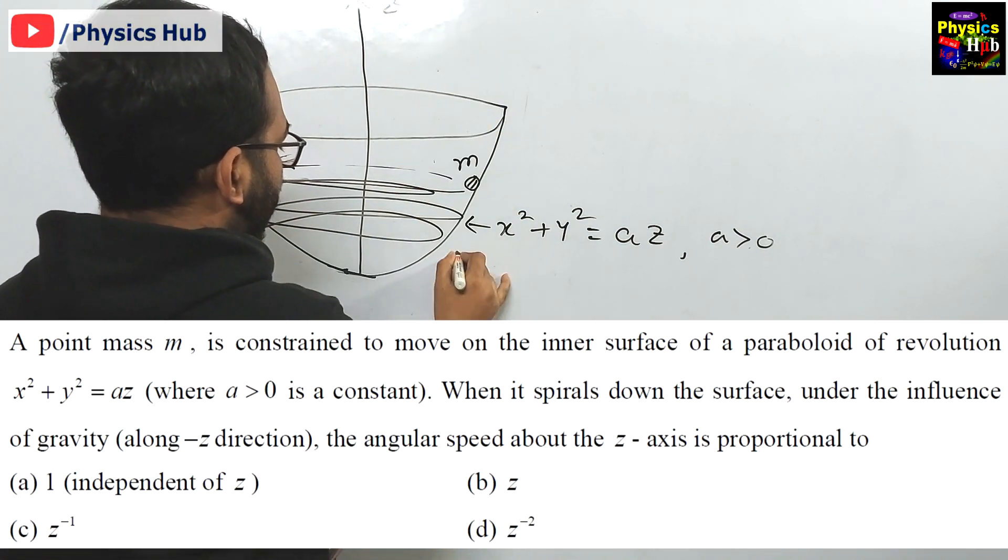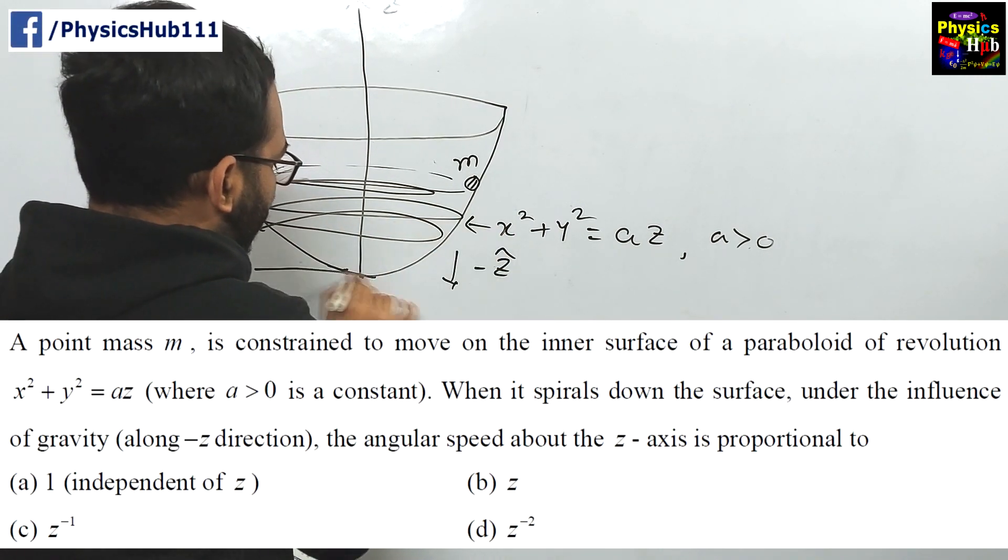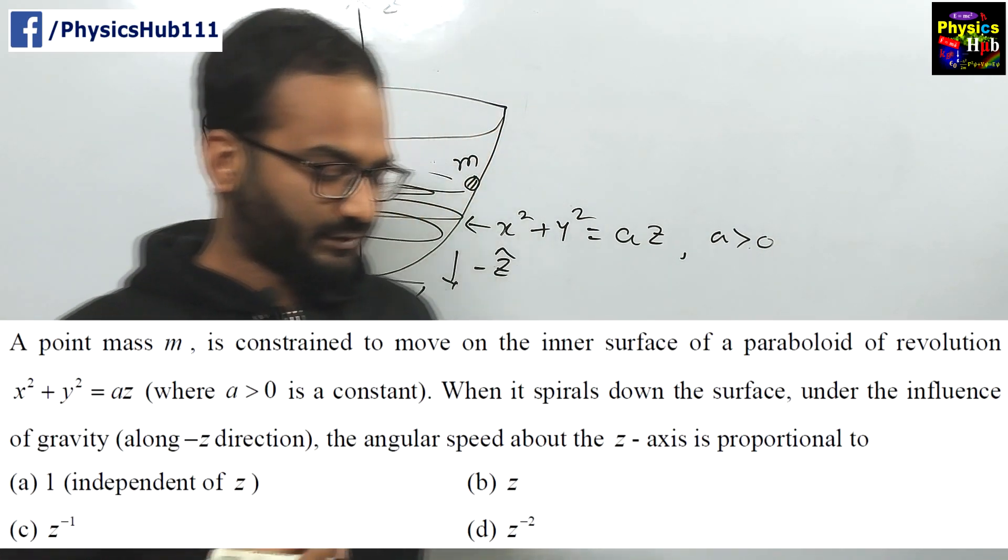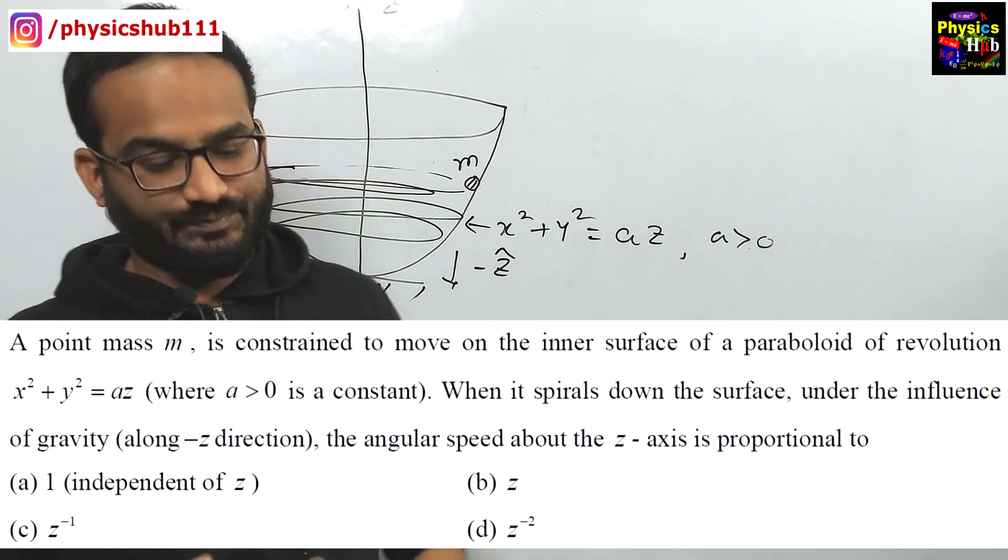If this is plus z direction, this direction is negative z direction. In this way it is coming down to the surface, inner surface lower bottom surface actually. We have to find out the angular speed about the z axis.